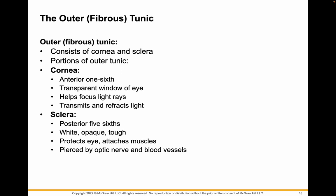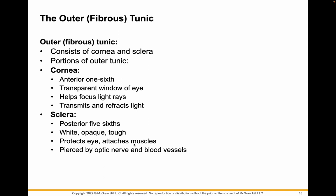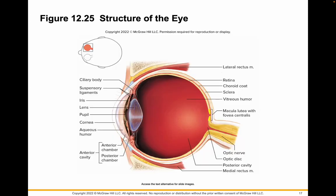The outer fibrous tunic is made of the cornea and sclera. The cornea is the transparent window of the eye — that clear glass structure — and it helps focus and refract the light so that you can focus on an object. The sclera is the white opaque structure at the posterior of the eye; it helps protect the eye but also attaches muscle. That white part is the sclera.